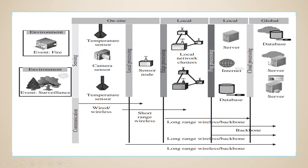From the cluster of nodes, it contacts the server — that is, the internet or database — and then it is transmitted globally. For this communication to occur, the connection can be wired or wireless. For short distances you use short-range wireless with very small bandwidth, and as you go further the bandwidth increases. For long-range and global transmission, a backbone network is required. We have now largely moved to wireless technologies.